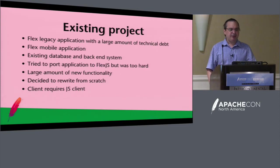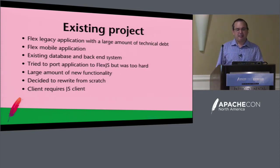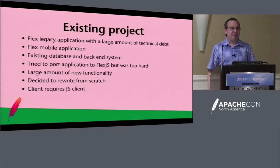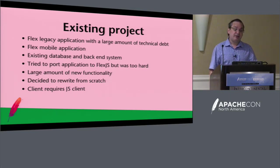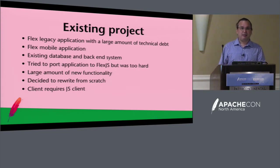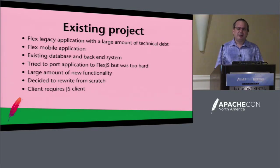So, the case study. A bit of background first. This was an existing project — a Flex legacy application with a huge amount of technical debt. It was written by one person, and if you're a single coder not on a team, you may fall into some bad habits: no version control, everything in one file. There was also a Flex mobile application and an existing back-end system and database. They had tried to port the application to FlexJS around version 0.7, about six months ago, but found it was too hard — mostly because a lot of the UI stuff was missing, and just trying to get things to compile was difficult.